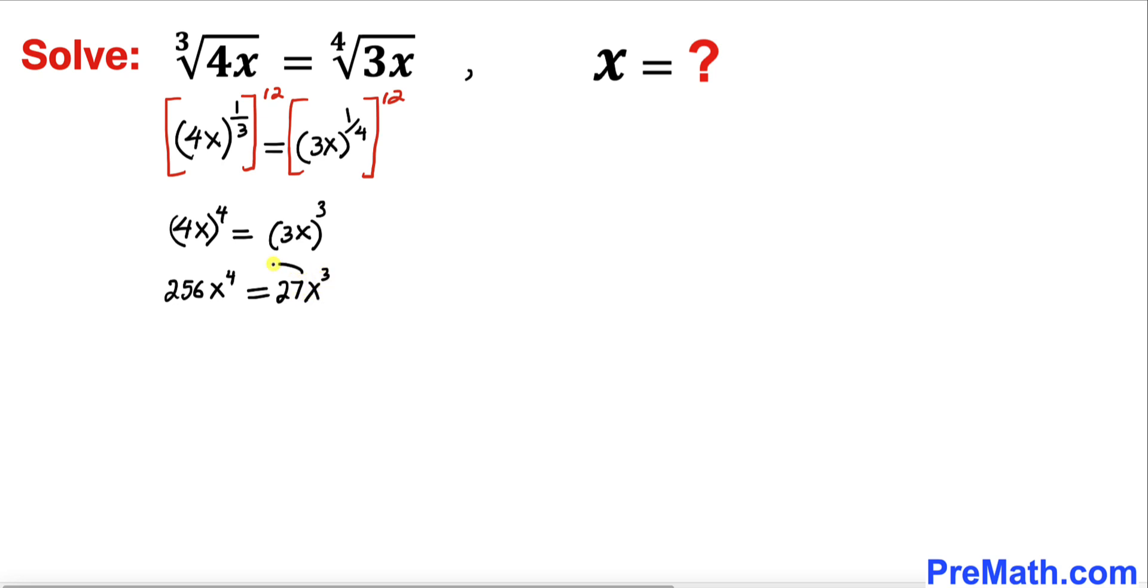Let's move this on the left hand side. Now we can see x^3 is in common between these two terms. So therefore we can factor out x^3 outside. So we ended up with x^3(256x - 27) = 0. Now let's go ahead and separate these two factors.